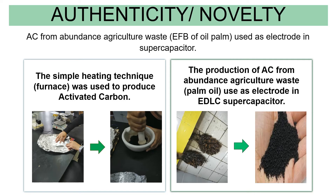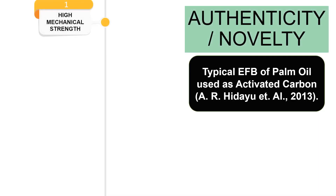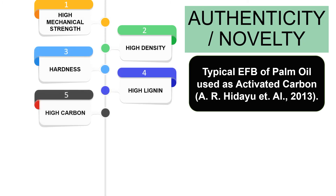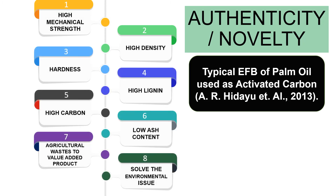Authenticity and novelty: A simple heating technique using a furnace was used to produce activated carbon. The production of AC from abundant agricultural waste — palm oil — used as electrode in an EDLC supercapacitor. A journal by Hideo (2013) on typical EFB of palm oil used as activated carbon states that AC from palm oil waste has high mechanical strength, high density, hardness, and high lignin.